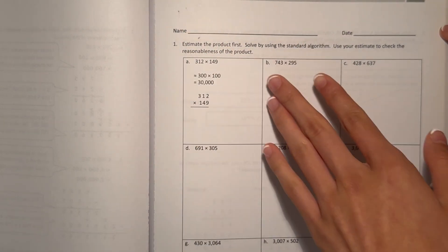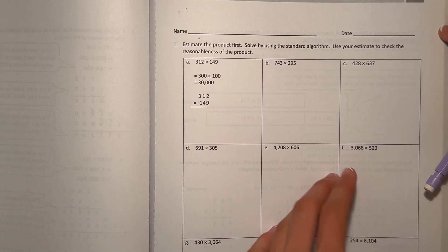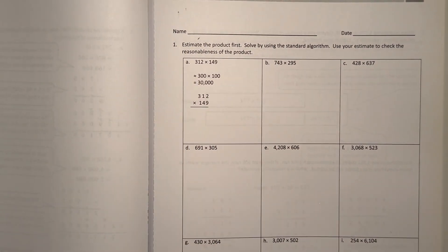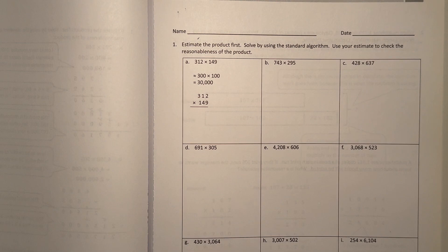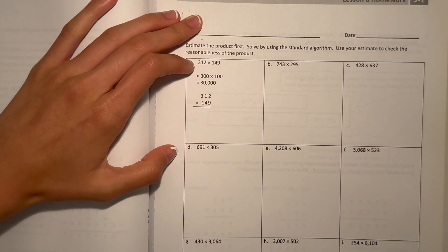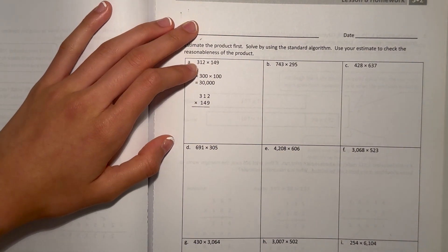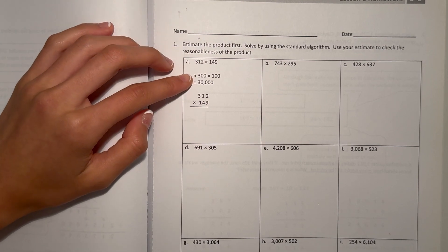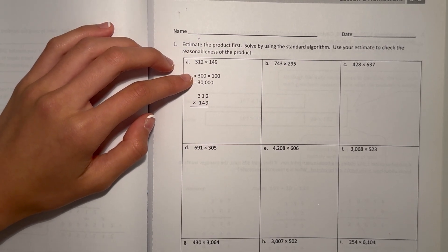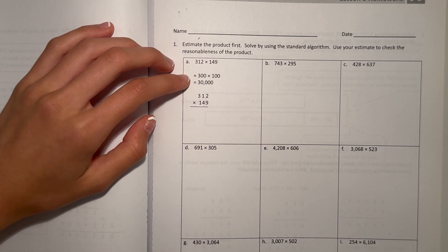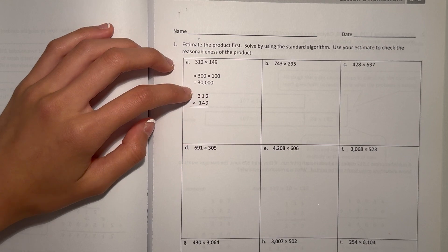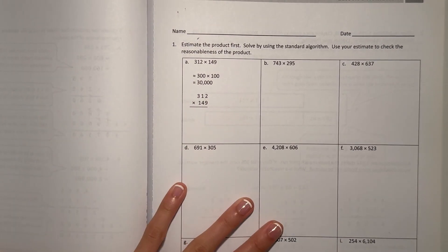So A, 312 times 149. If we round 312 to the nearest 100, that's 300. And 149 to the nearest 100 is 100. 300 times 100 is 30,000. So that would be our estimate. Now let's do the actual math.